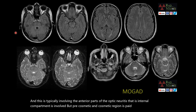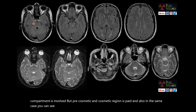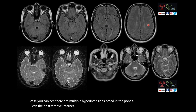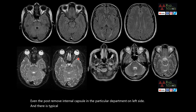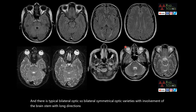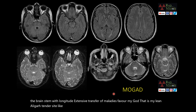In the same case, there are multiple hyperintensities noted in the pons, posterior limb of the internal capsule, and periventricular white matter on the left side, with typical bilateral optic neuritis. Bilateral symmetrical optic neuritis with brainstem involvement and longitudinally extensive transverse myelitis favour MOGARD — myelin oligodendrocyte glycoprotein antibody-associated disease.